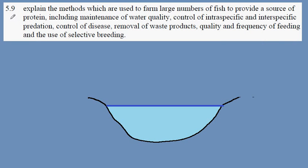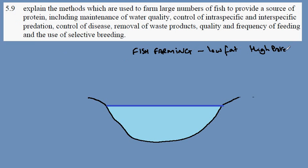IGCSE Biology Syllabus Statement 5.9: Fish Farming. Fish are an attractive product for farmers as they have low fat and high protein. The second feature which makes them attractive is that they are efficient at turning their nutrients into fish mass.